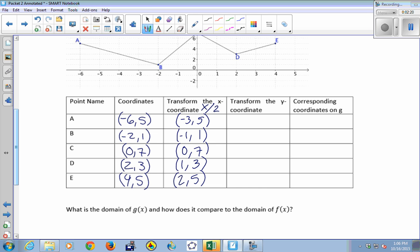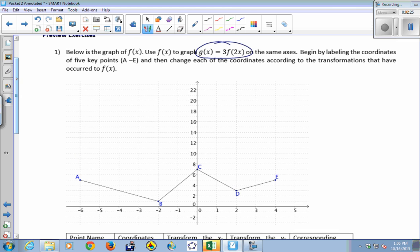And then my next step is to transform the y-coordinate. So the 3 that's outside the function, that indicates transform y. What do I do? Multiply by 3. Yeah, when it's an outside change, something that changes y, vertical change, those things always just are exactly what they look like. That says 3 times f of x, or 3 times f of 2x, so triple the y-coordinate.